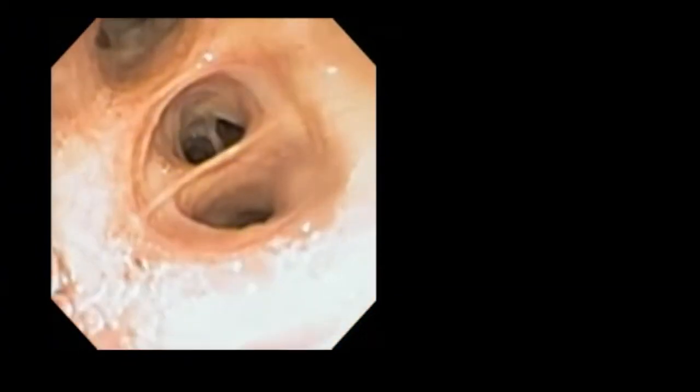The left upper lobe splits into the lingula, seen on the right, and an upper division. The lingula is identified by its rightward direction and bifurcation into inferior and superior segments. The upper division of the left upper lobe creates a trademark Mercedes or peace sign, and is a trifurcation of the apical, posterior, and anterior segments.